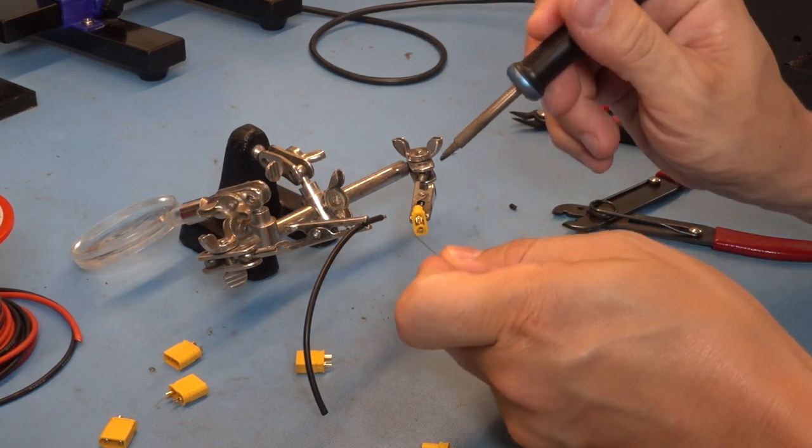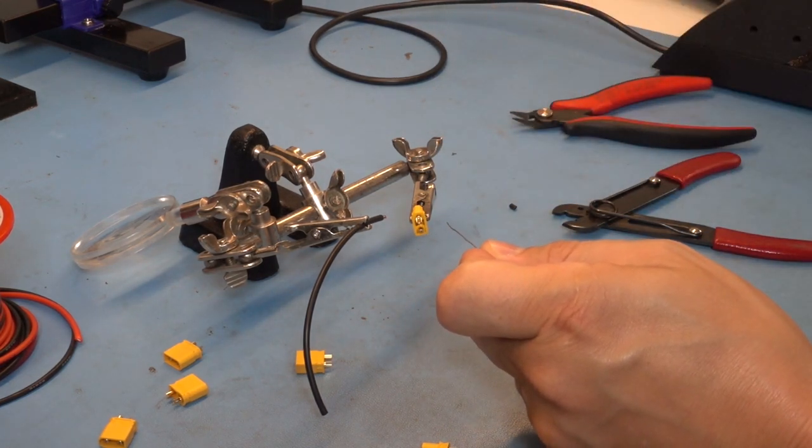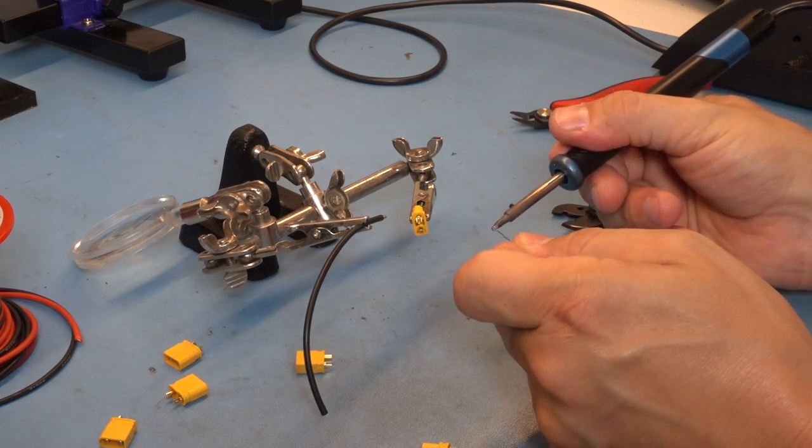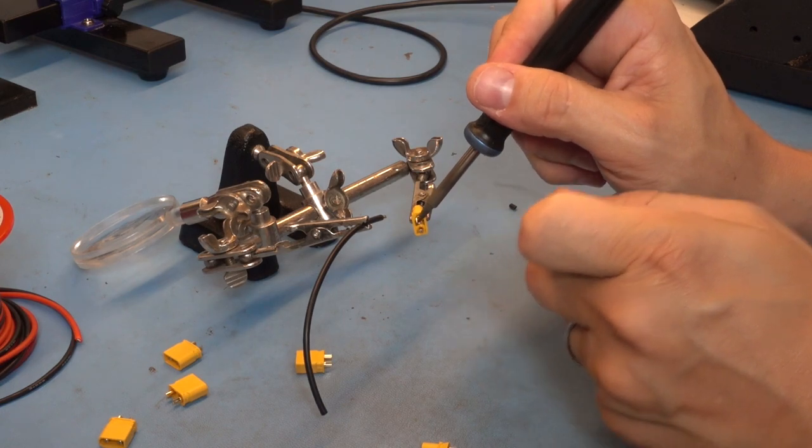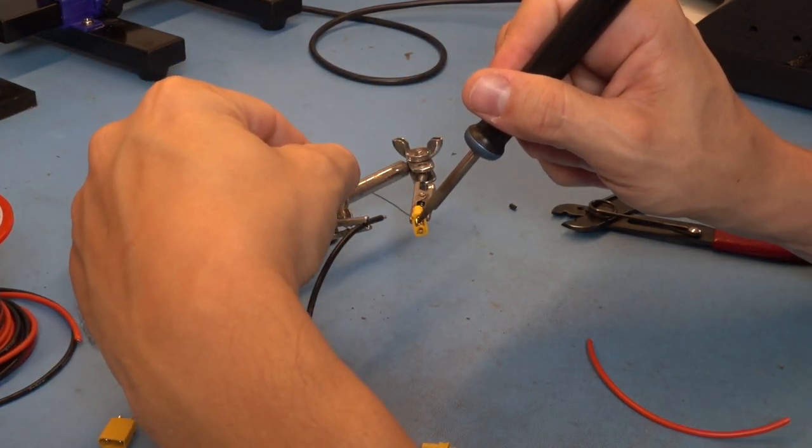Now we'll tin the connector. I put a little bit of solder on the tip of the iron, touch it to the inside of the connector, and once it heats up, touch the solder wire into the connector.